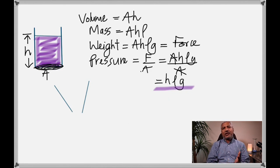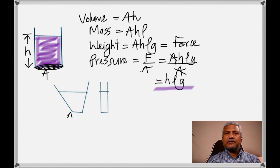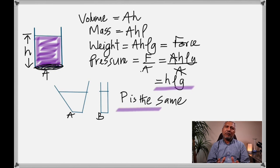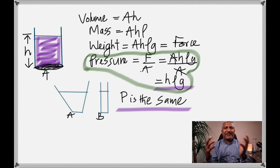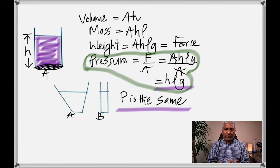Does pressure depend on the shape of the container? No — two different containers filled with the same liquid to the same height have the same pressure at the bottom. Pressure depends only on height h, density ρ, and g — not on the quantity of liquid. If you're at the same depth in a lake or a small container, the pressure is the same.